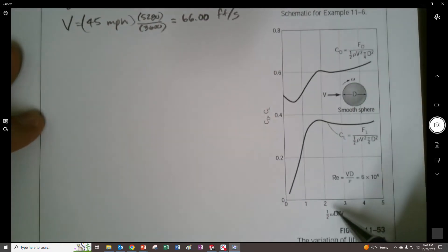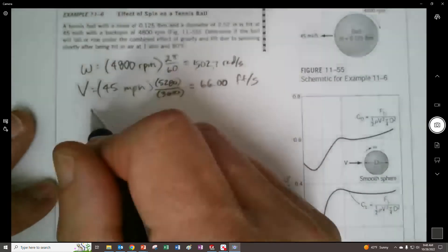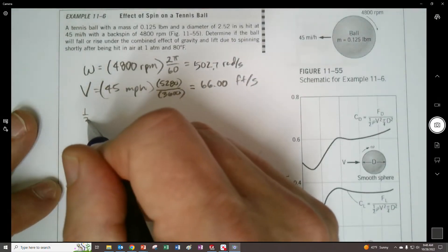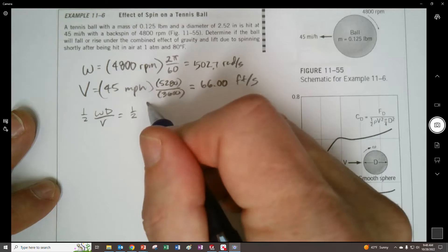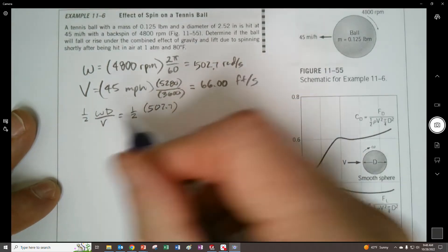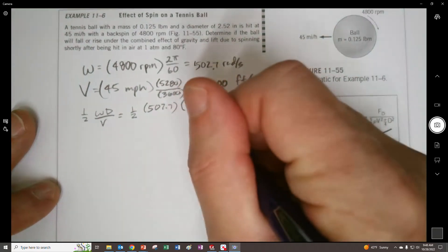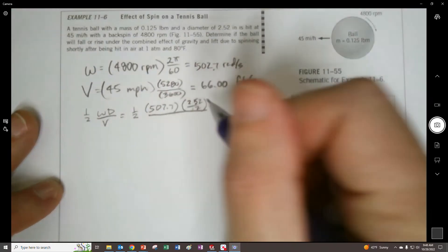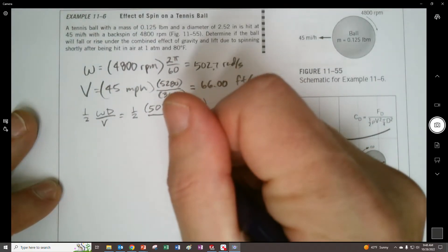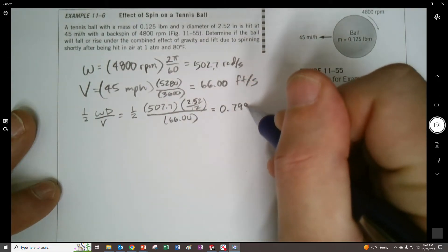You can see in the denominator here, this is a non-dimensional rate of rotation, right there. So let's get that, one half omega D over V. That's one half times 502.7 radians per second, the diameter is 2.52 divided by 12 to get in feet, and then divide by our 66, and that will become dimensionless and get 0.7997.